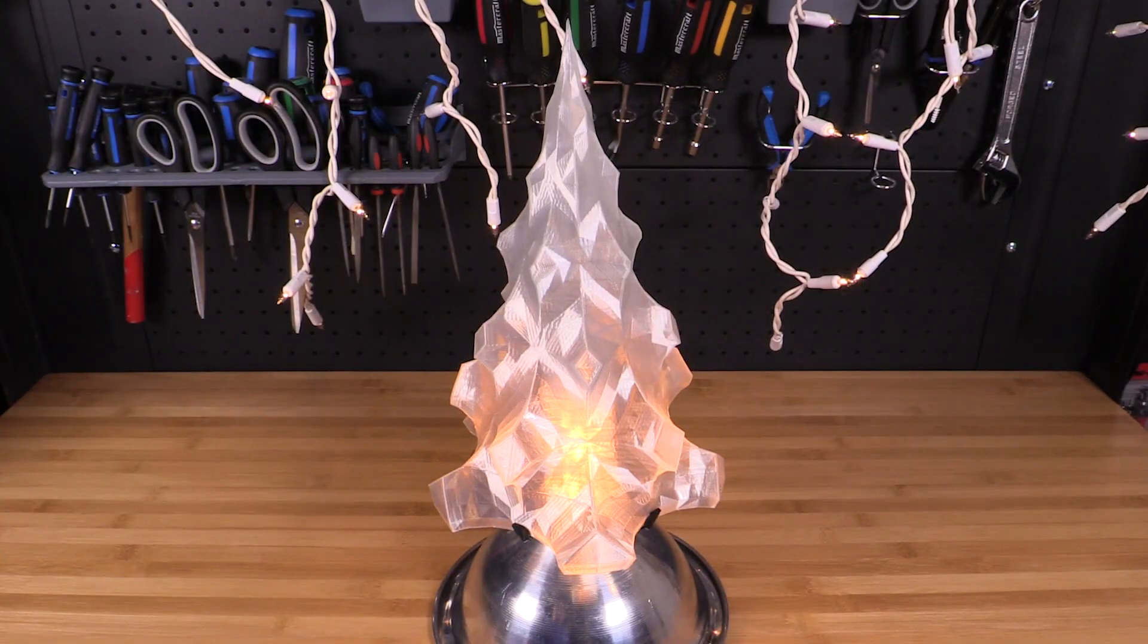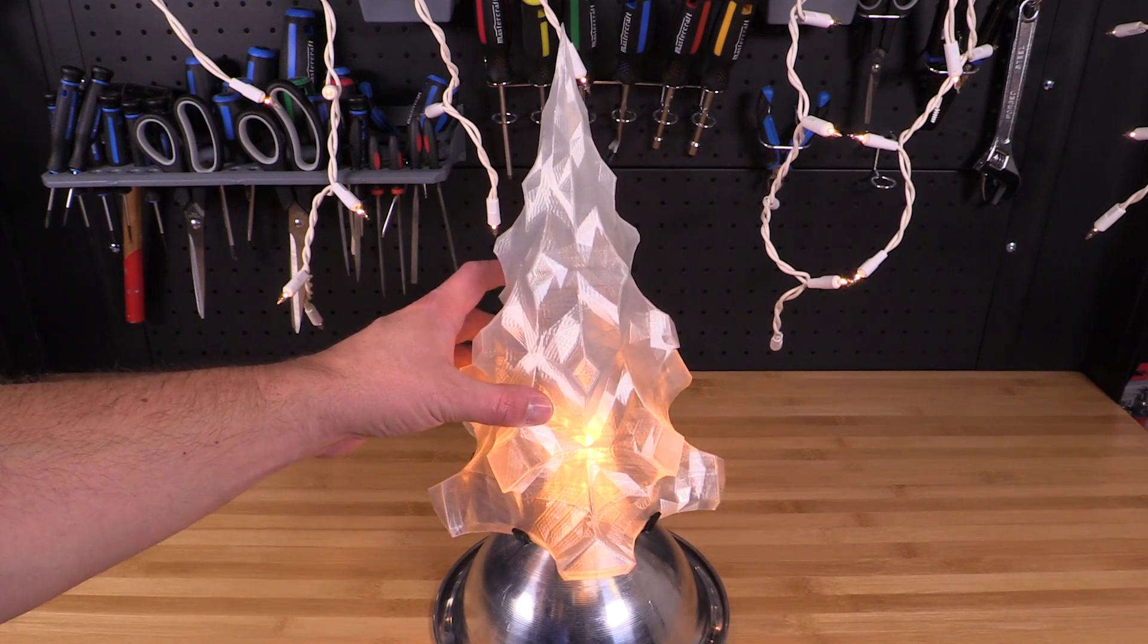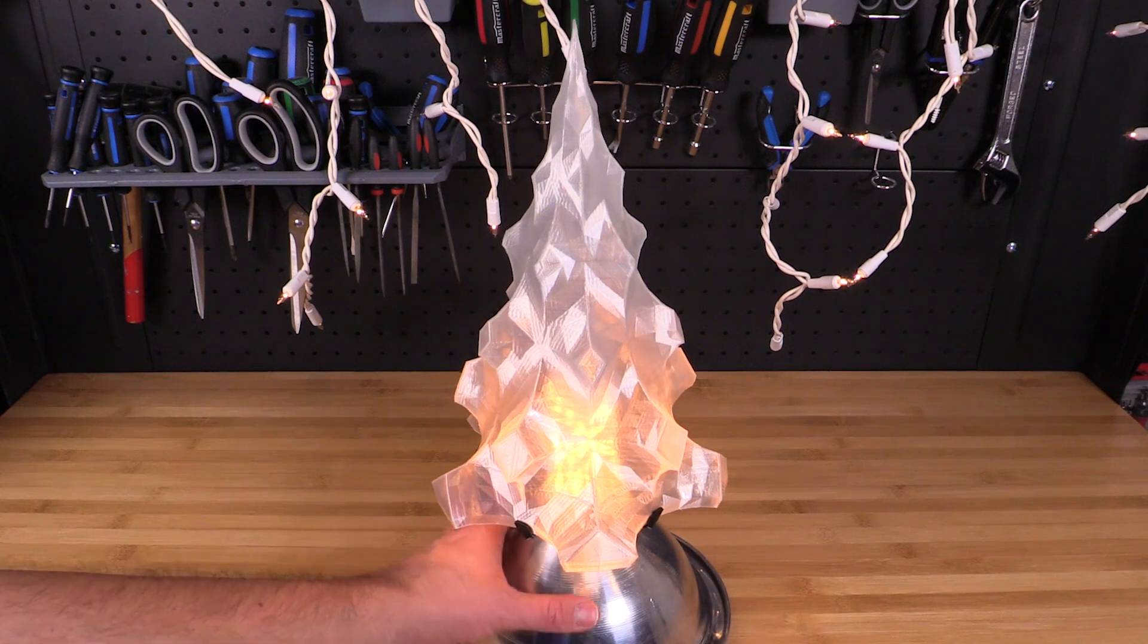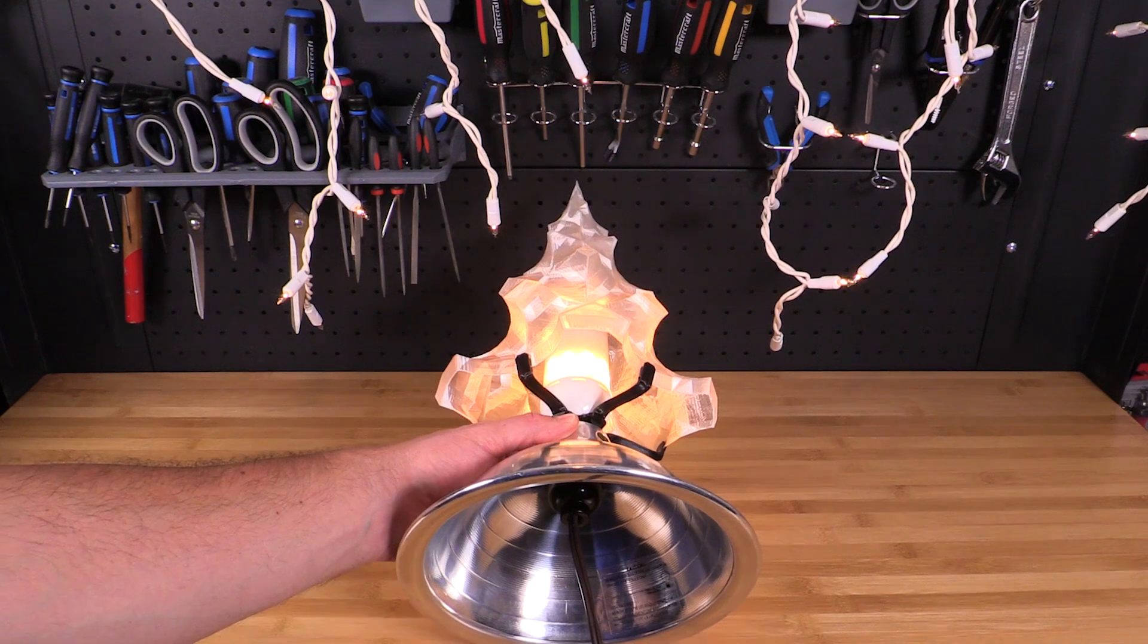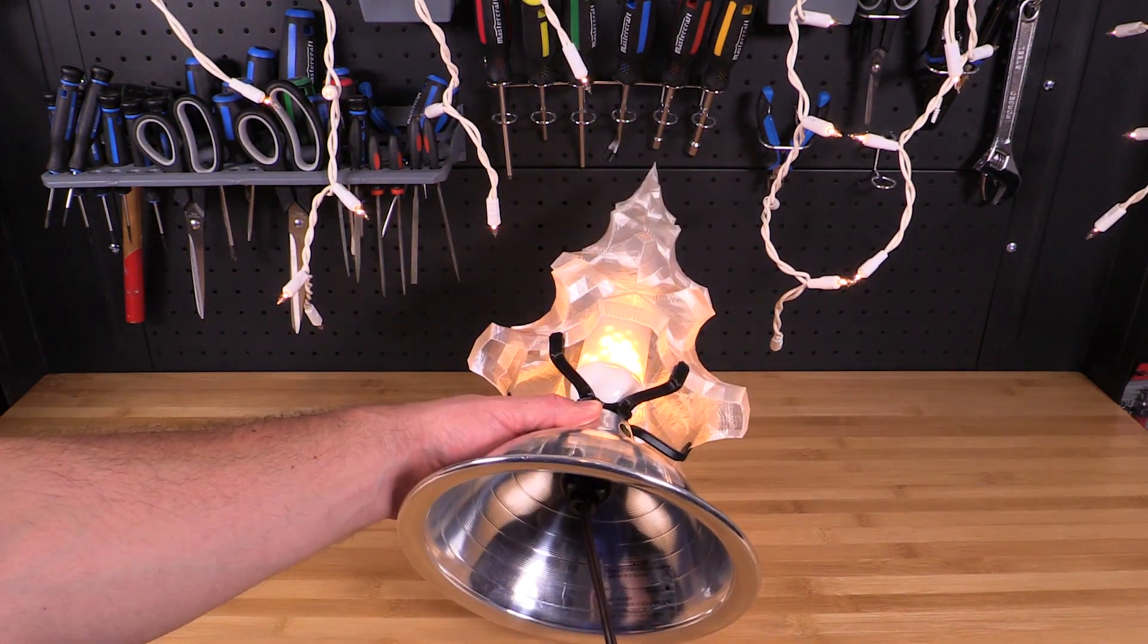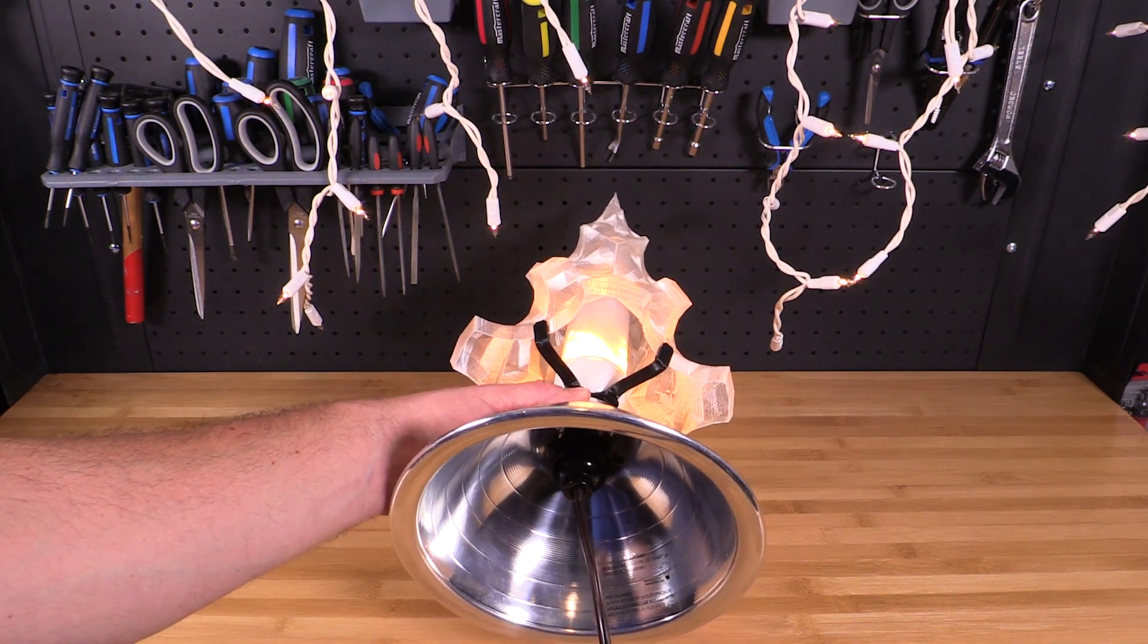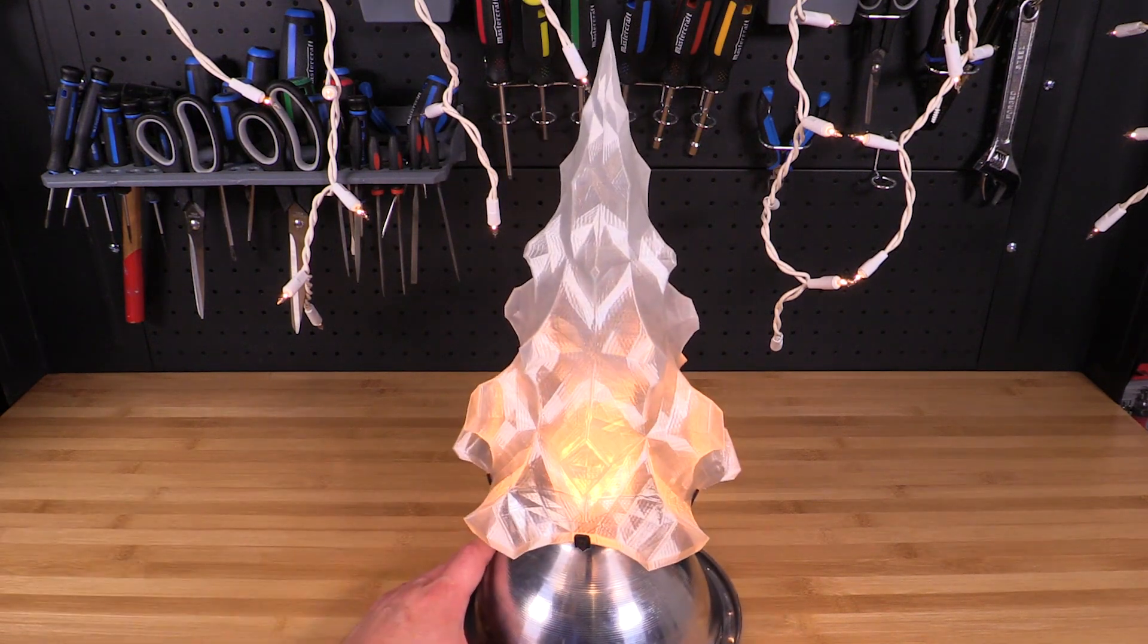Last but not least, we have this translucent Christmas tree print. This is a real fun one to do, quite popular. It basically has a base that will adapt to any of these hardware lights, you simply flip them inside out, stick the base in there, clip it on. I have a little fire LED in there, but you can use basically any bulb you want. Turn it on and you have a cool little Christmas tree.